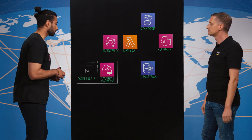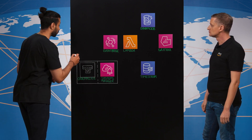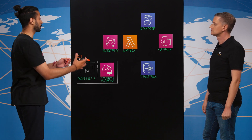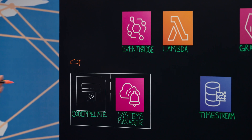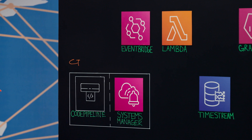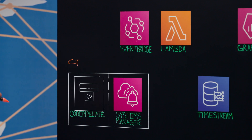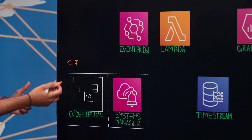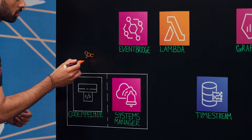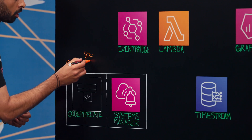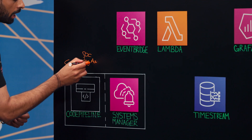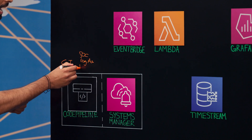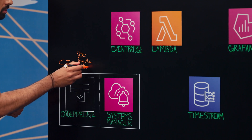Let's start off in the bottom left here with Control Tower. Control Tower is an AWS solution that helps you set up a landing zone, effectively helping you define what a good AWS estate looks like. That's really important so you can cover things around security, logging, auditing, and it also gives you the ability to scale out your workloads as demand in your business increases.